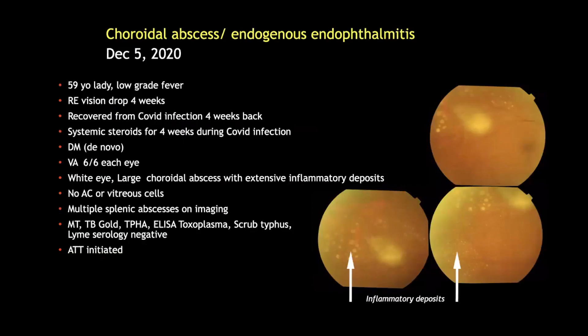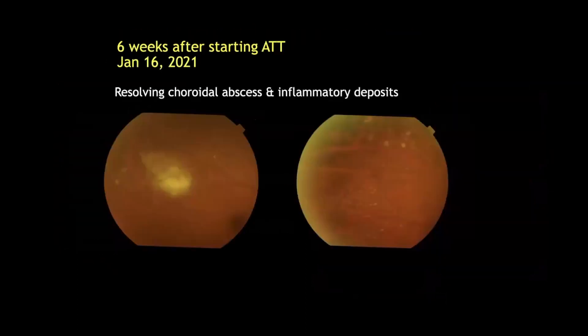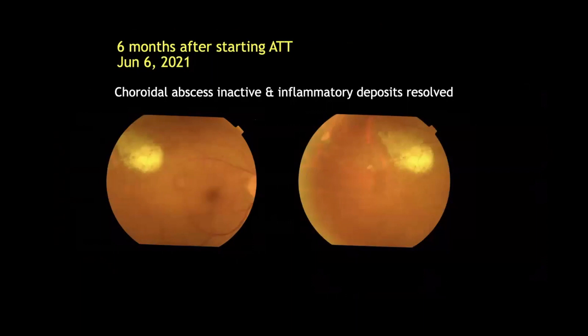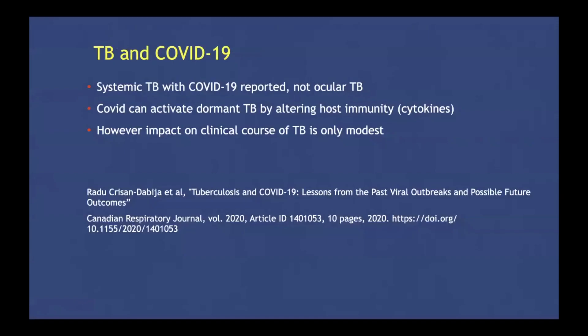A 59-year-old lady presented in December last year with blurring of vision for four weeks. There was a large choroidal abscess with inflammatory deposits. These symptoms had started during her COVID infection four weeks prior to presentation, at which time she had also developed diabetes. She was investigated and all results were negative. Based on the clinical picture, she was placed on antitubercular therapy with rapid resolution at six weeks and complete clearing at six months. Systemic TB with COVID-19 has been reported but not ocular tuberculosis; it is speculated that COVID-19 can activate dormant TB by altering host immunity.